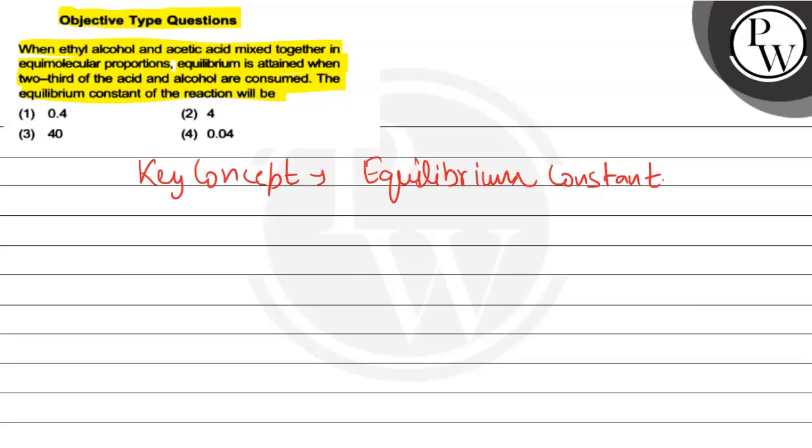The reaction is: ethyl alcohol C2H5OH liquid plus acetic acid CH3COOH liquid gives CH3COOC2H5, that is ethyl acetate liquid, plus water. This is our reaction.